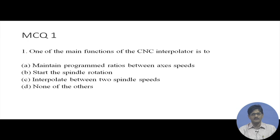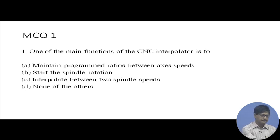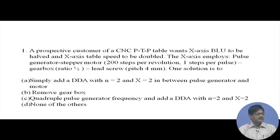Along the cutter path we have to maintain a particular feed rate, and along different axes like X, Y, Z we have to maintain the correct ratio of these axis feed values. That ensures that the correct profile or contour will be cut. In CNC we have no part-specific jigs, templates, or cams, but all cutter paths are executed by maintaining the correct programmed ratio between axis speeds. So option A is the correct answer.